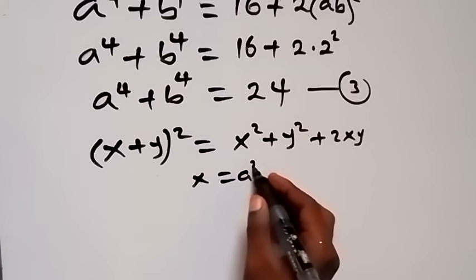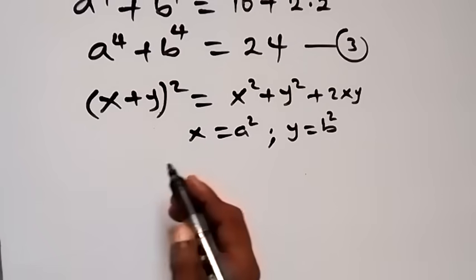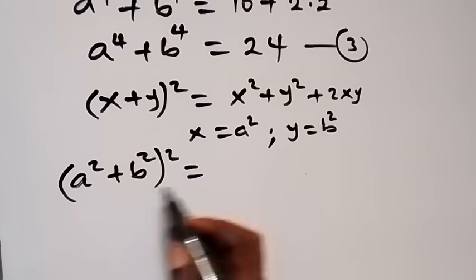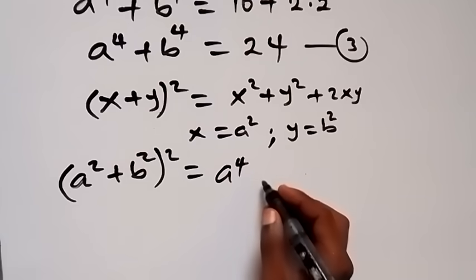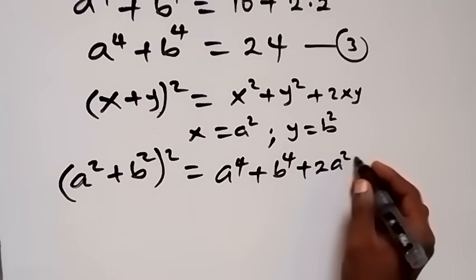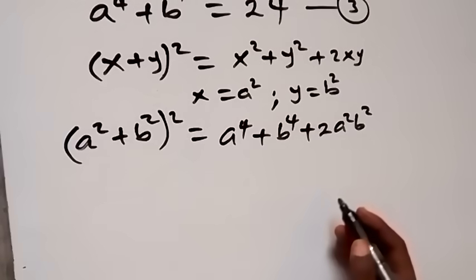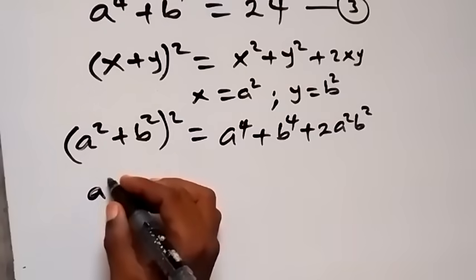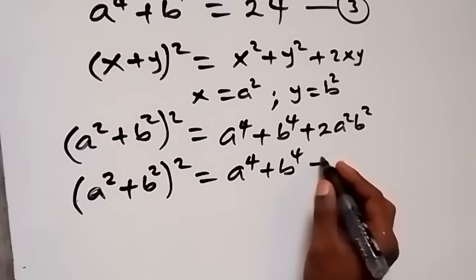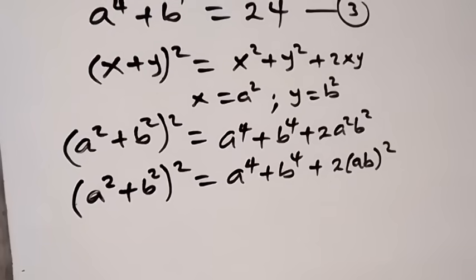We set x equal to a squared and y equal to b squared. Writing the identity with these substitutions, (a² + b²)² equals a⁴ plus b⁴ plus 2a²b². We can write 2a²b² as 2(ab)². Since ab equals 2 from equation 2, and a⁴ plus b⁴ equals 24 from equation 3.